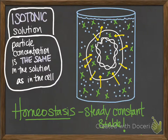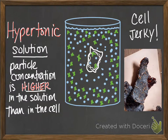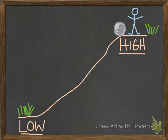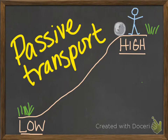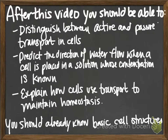In all these situations — isotonic, hypotonic, and hypertonic solutions — no energy is used, because we're moving particles from high to low concentration: easy as rolling down a hill. We call all these forms of particle motion passive transport, because they don't require energy. Facilitated diffusion is also passive transport — no energy is required to move down a concentration gradient. Can you now tell the difference between active and passive transport? Hint: it's energy use. Can you predict the direction of water flow when a cell is placed in a solution of known concentration? We'll flesh out how cells use transport to maintain homeostasis when we get to active transport.